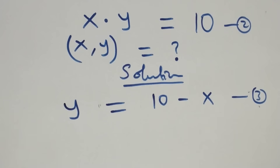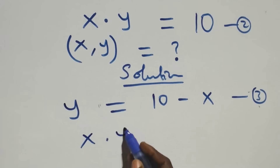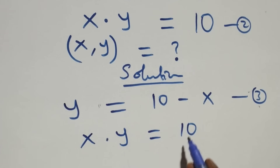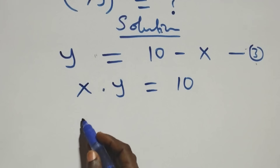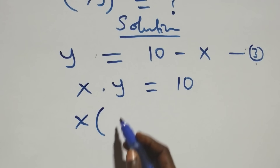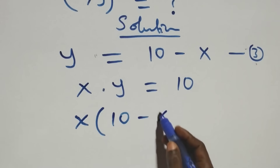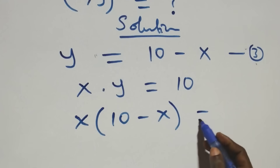Then from equation two, which is x times y equals to ten, we substitute equation three. This becomes x times (ten minus x) equals to ten.